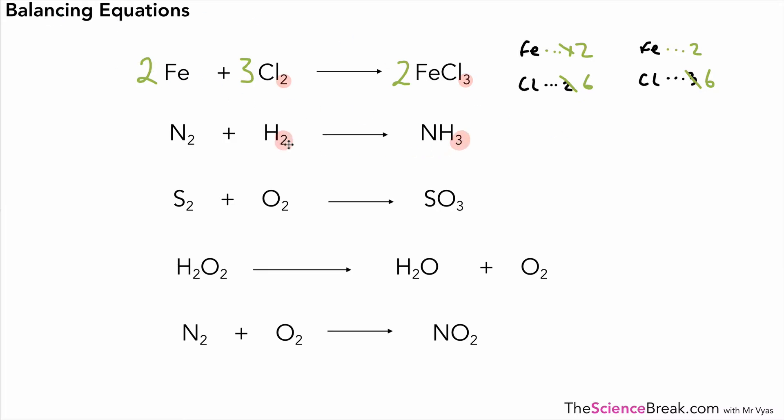For the second one, it's similar in that we've got 3 H's on the right and 2 H's on the left. So we put a 2 and a 3 to make it up to 6. And the N2 already has 2 atoms on the left. Similar for the third one, let's go 2 there and 3 there to make the O2s up to 6. And 2 S's, 2 S's on each side, those 3 are now balanced.